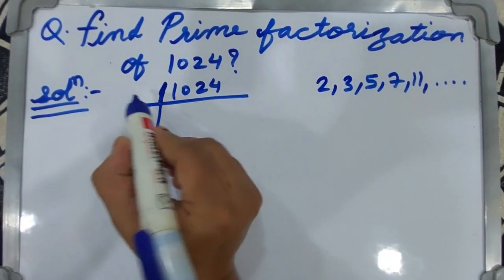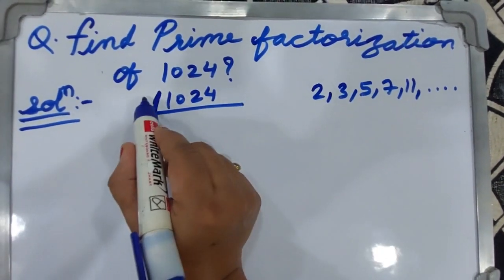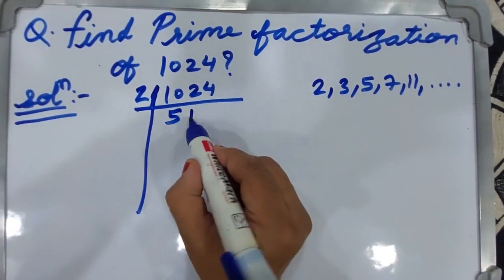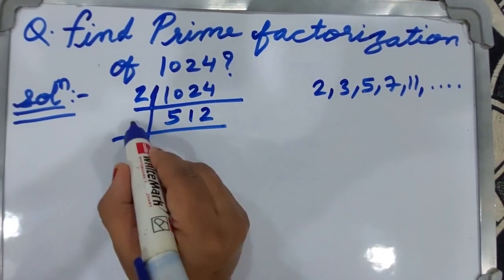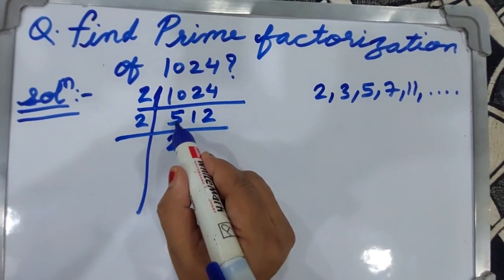Then you can solve it. First, this is a multiple of 2. Yes, 2 twos are 4, again 2 twos are 4, then 5 minus 4, then 1 remaining, then it becomes 11.